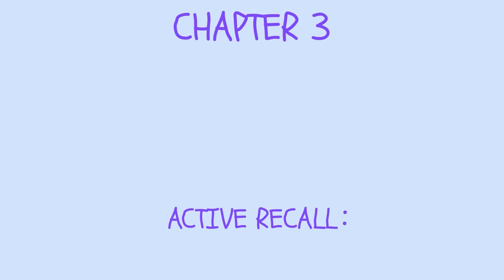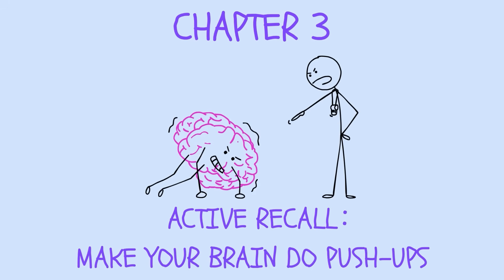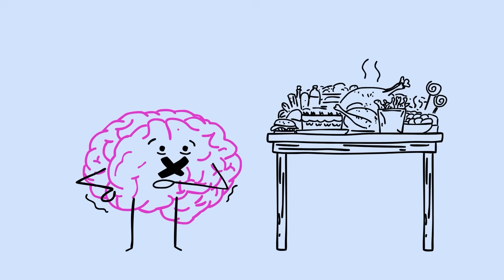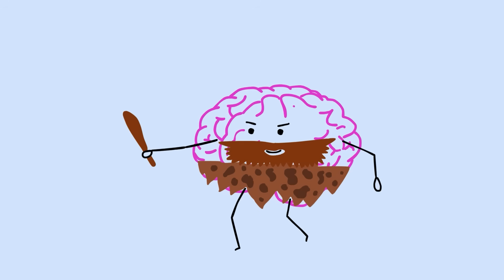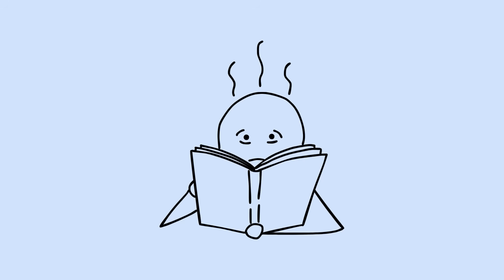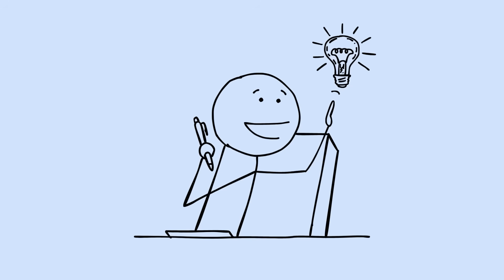Chapter 3. Active Recall. Make your brain do pushups. Stop feeding your brain, make it hunt for food. This might sound crazy, but the harder you make learning feel, the easier remembering becomes.